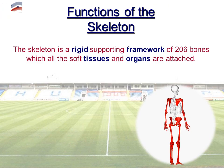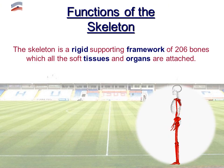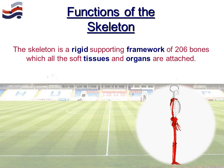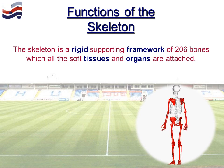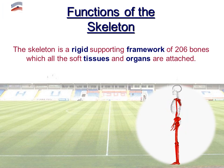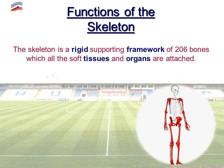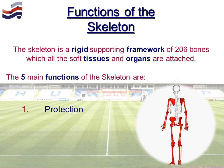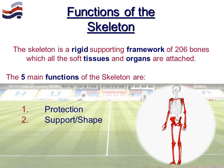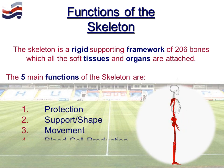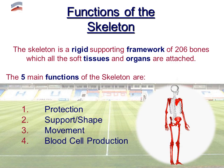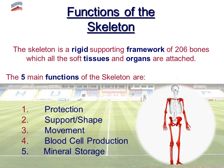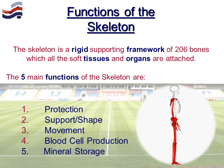We're now going to jump into the five functions of the skeleton. As we know, it is a rigid supporting framework containing 206 bones, but we only need to know 21. The five roles that we need to know are protection, support, movement, blood cell production, and mineral storage.